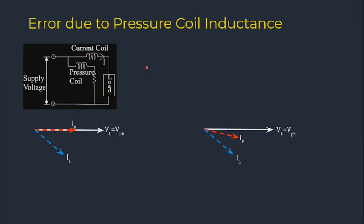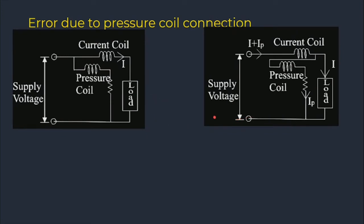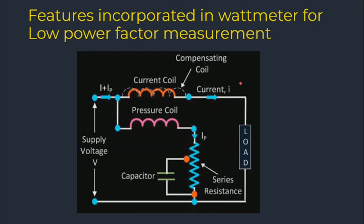Regarding error due to pressure coil inductance: VL equals V phase, and IP lags behind VL because of pressure coil inductance. The load current IL is also lagging. Ideally VL and IP should be in phase, but due to pressure coil inductance, IP lags. To correct this for low power factor measurement, a capacitor is connected in parallel with the series resistance to reduce errors due to pressure coil inductance and obtain correct readings.